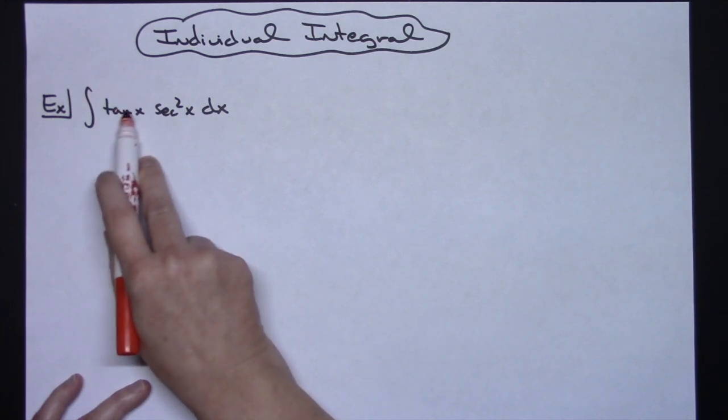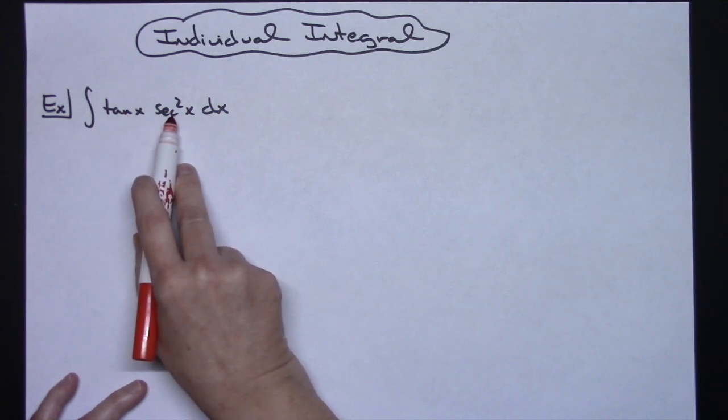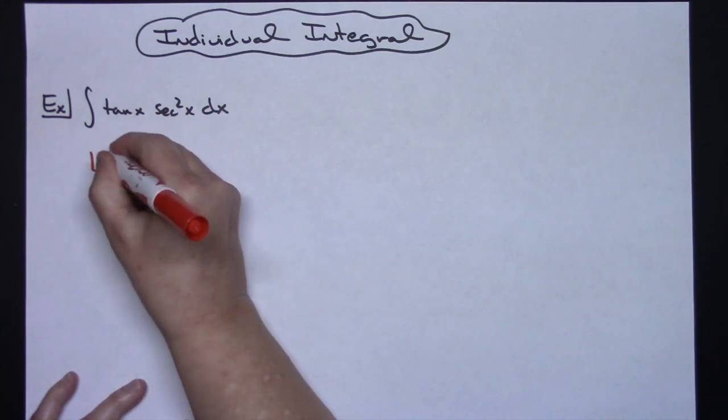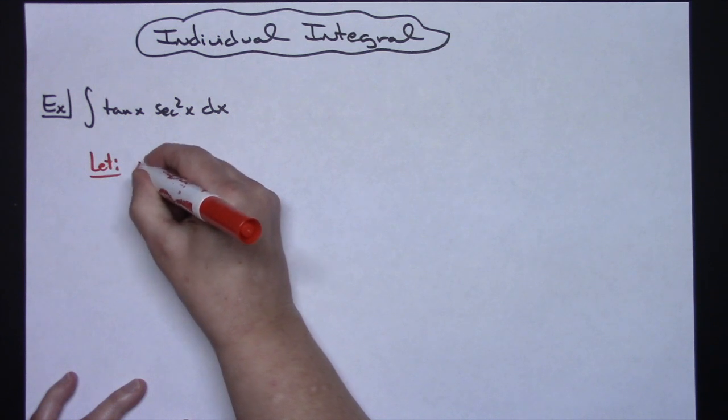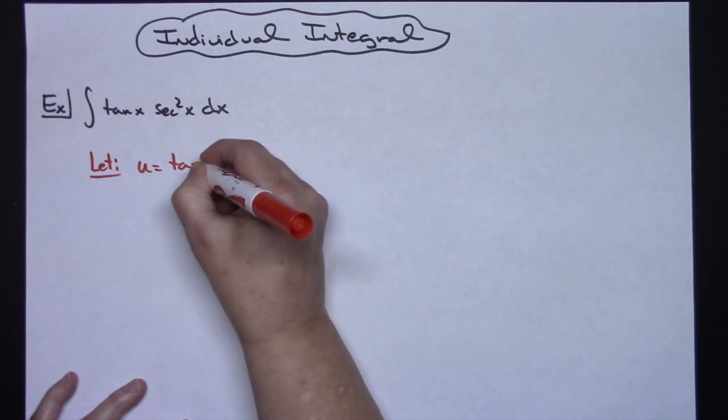If I let u be tangent, the derivative of tangent is secant squared. So that means that secant squared is going to cross out. So that's where I'm going to start. I'm going to let u equal tangent x.